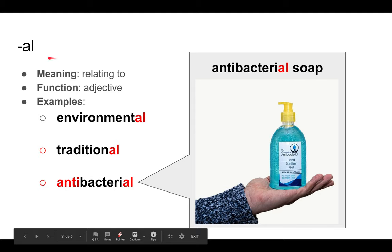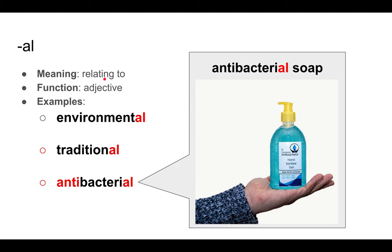The first one is -al, and it means 'relating to.' Its function is an adjective. Some examples are environmental, traditional, and antibacterial. So, environmental is relating to the environment. Traditional is relating to tradition. And antibacterial is relating to — against — bacteria. It's an adjective, so we say antibacterial soap. It comes before a noun.